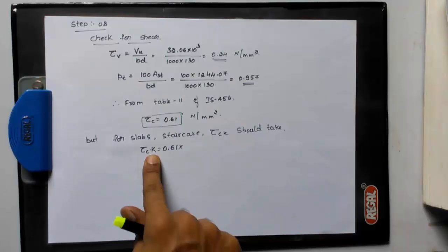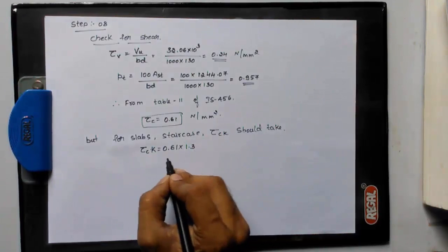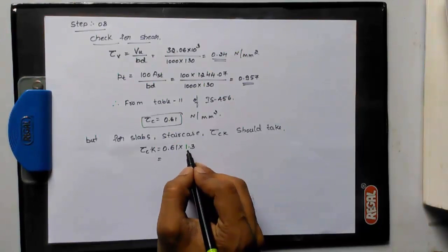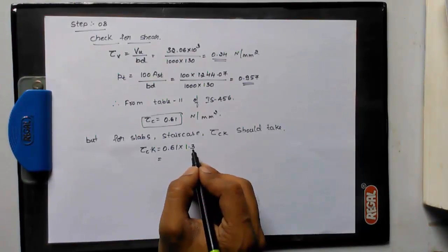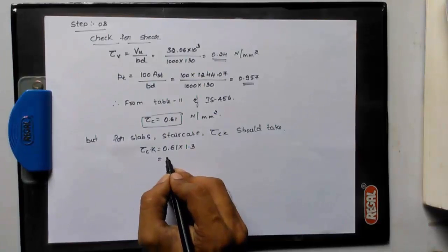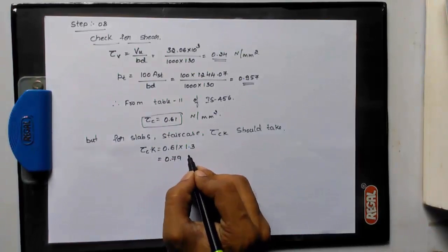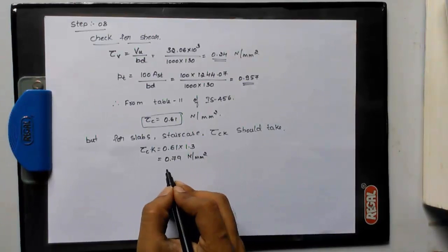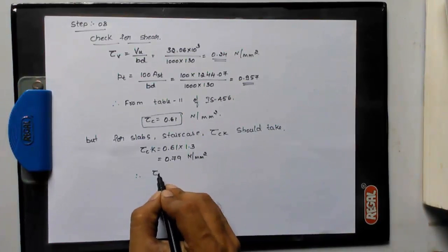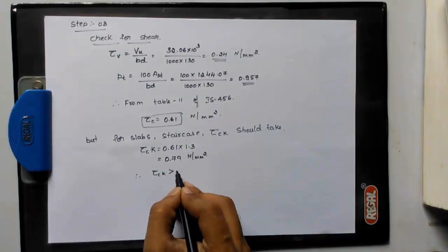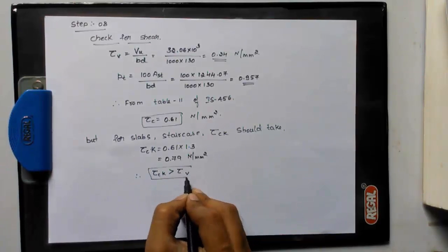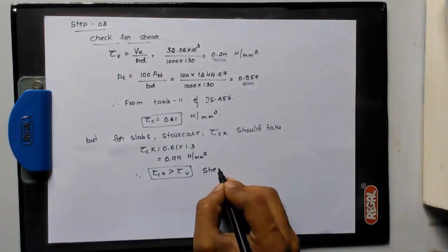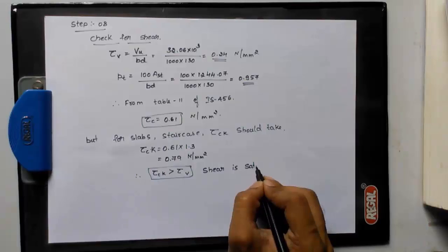We will get from IS 456, that is the value is 1.3 for overall depth 150 mm. We will get the value 1.3, that will be equal to 0.79 newton per mm square. Therefore, tau ck is greater than tau v. This means shear is satisfied.